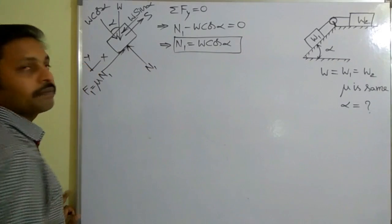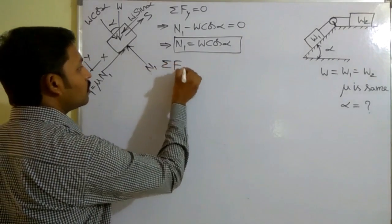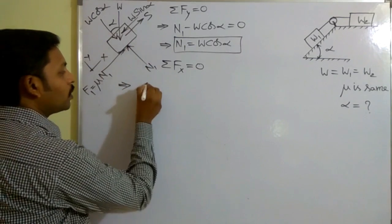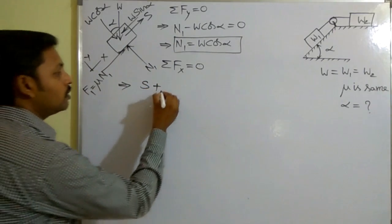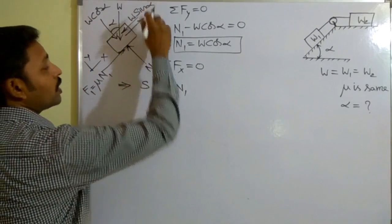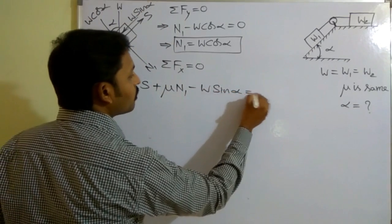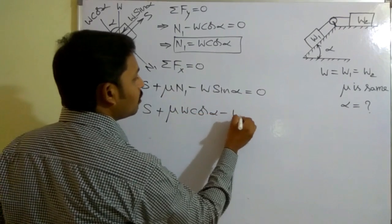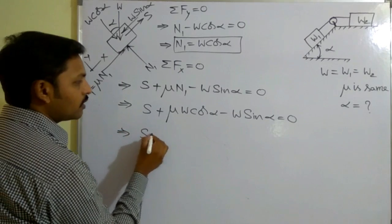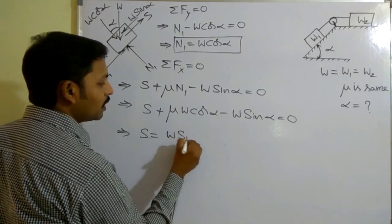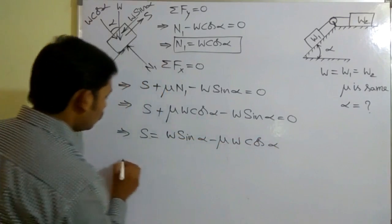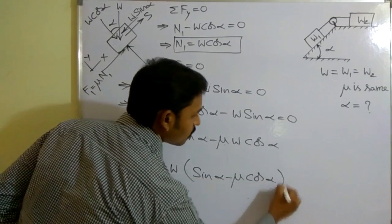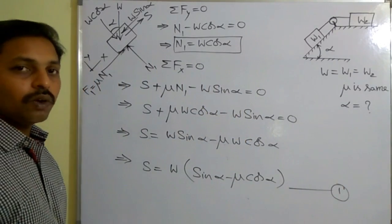This is the relation I got for N1. Next, consider sigma Fx = 0 — the algebraic sum of force components along x equals zero. Along x: S is along positive x direction, mu·N1 (which is F1) is also along positive x, and W·sinα is along negative x. So: S + mu·N1 - W·sinα = 0. Substituting N1 = W·cosα gives S = W·sinα - mu·W·cosα, which simplifies to S = W(sinα - μ·cosα). Consider this as Equation 1.